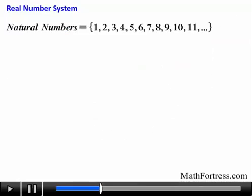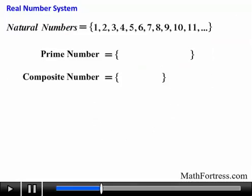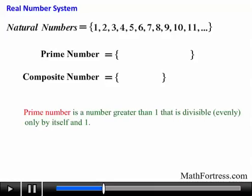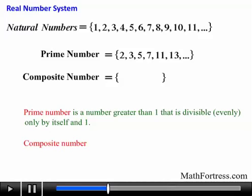Each natural number is either a prime number or a composite number. A prime number is a number greater than 1 that is divisible evenly only by itself and 1. For example, the numbers 2, 3, 5, 7, 11, and 13 are the first 6 prime numbers.